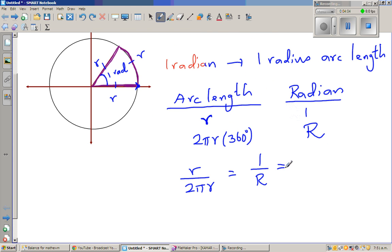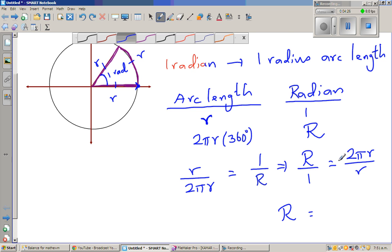So, this implies r over 1, making reciprocal of this, is equal to 2πr over R. So I can say R is equal to 2πr. Sorry, 2πr. This r and r gets cancelled. So this R is equal to 2π.